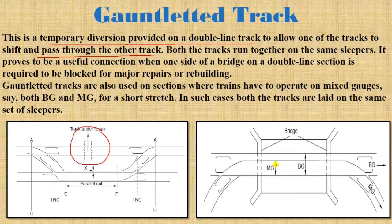For mixed gauge sections — where both meter gauge and broad gauge are used — a gauntlet track arrangement is provided. Further details on gauges are available in the channel's rail engineering lecture series linked in the description.